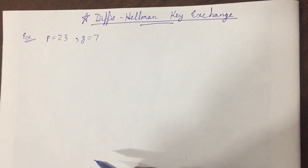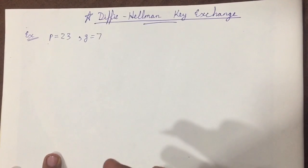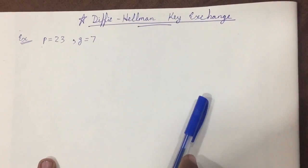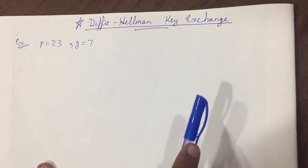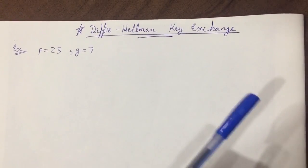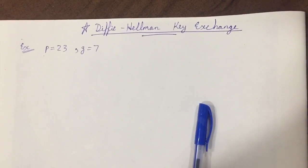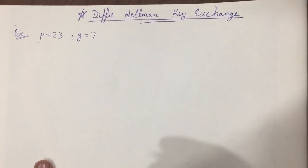Hello friends, in this lecture we are going to learn about the Diffie-Hellman key exchange. Diffie-Hellman is an algorithm used to establish a shared secret between two parties. It is primarily used as a method of exchanging cryptographic keys for encryption or decryption.